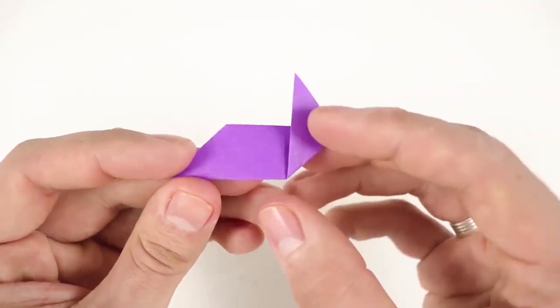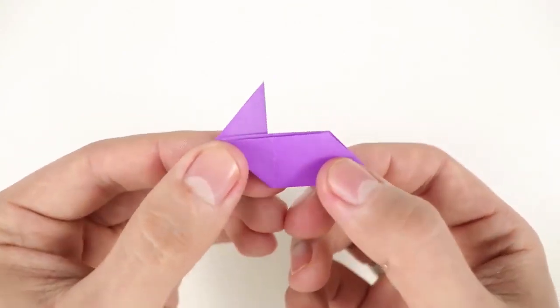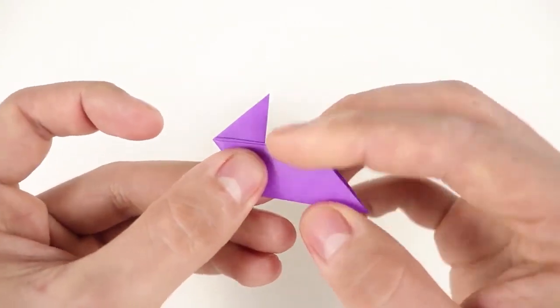Now, turn it over, and repeat. Again, fold the right side, half of the bottom to the middle.